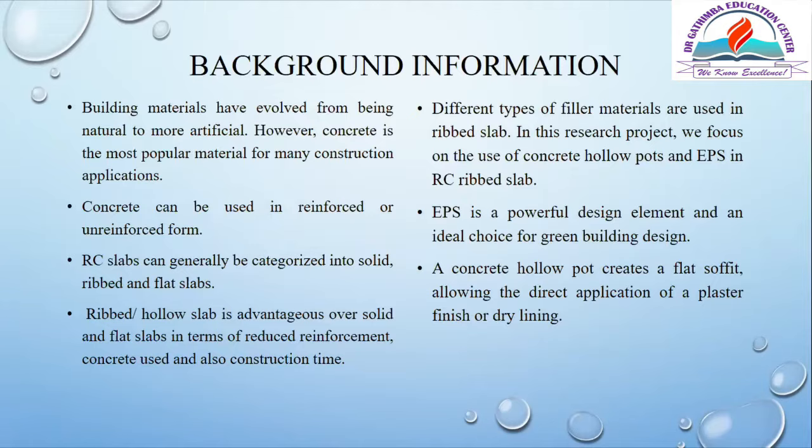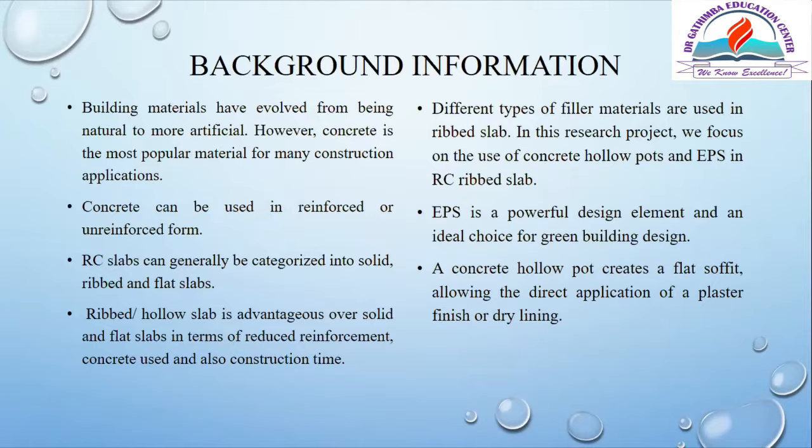Different types of filler materials are used in ribbed slabs. In this research project we focus on the use of concrete hollow pots and EPS in reinforced concrete. The problem statement: the increment of dead load in construction of a ribbed slab using concrete hollow pots represents a critical problem. This increases foundation sizes, hence additional materials, making the building more expensive. The increased amount of concrete has also led to overexploitation of natural building materials, and an alternative lightweight material such as EPS is needed to reduce the dead load in the slab.